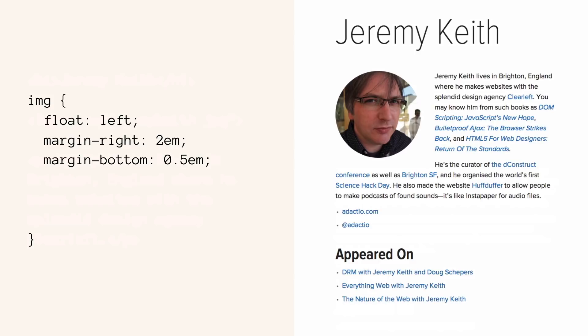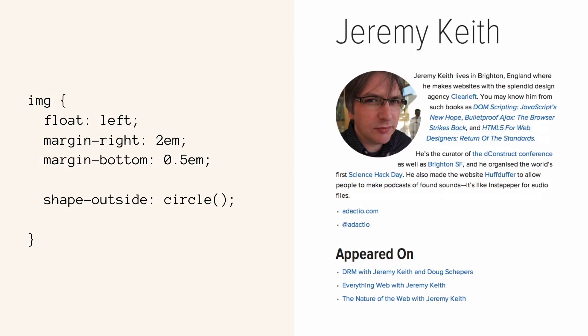If I add one line of code — shape-outside: circle — then rather than the flow content going in a box around the box that the image lives in, because in CSS everything's always a box, we can tell the browser to run that flow content in a circle and not in a box. And you get this beautiful, simple effect. It has an elegance and polish to it that we don't see necessarily very often on the web.